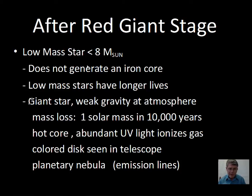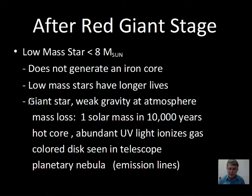As we get towards eight solar masses, a star might be able to fuse carbon a little bit, but it's not going to go through the full process of building up to an iron core. The low-mass stars have less fuel than high-mass stars, but they don't burn that fuel very fast — their luminosity is proportional to mass to the 3.5 power. So when mass is small, luminosity is small. They have a small amount of fuel but use it very slowly, giving them extremely long lifetimes.